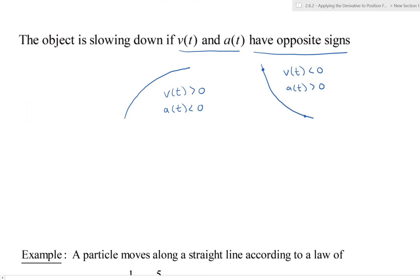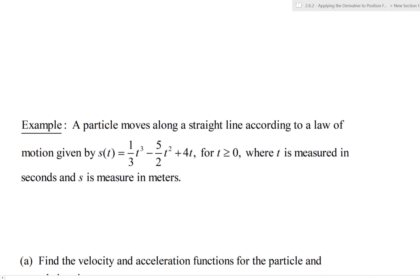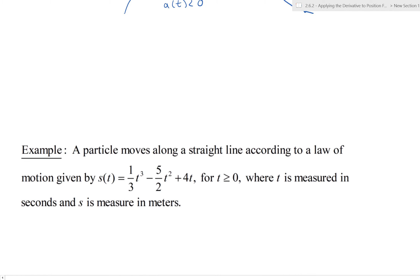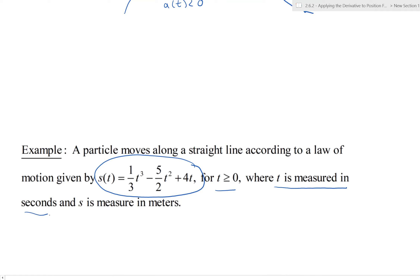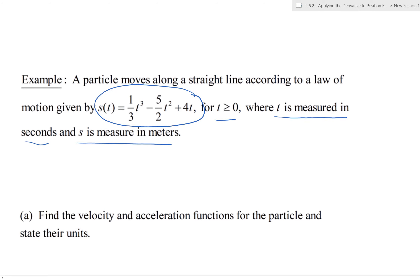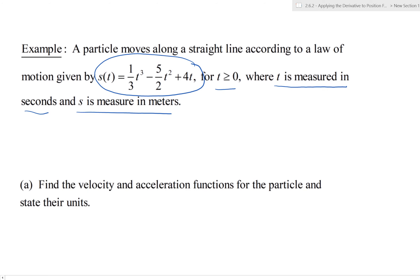Here's the example problem. A particle moves along a straight line according to the position function s(t) = (1/3)t³ − (5/2)t² + 4t, for t ≥ 0, where t is measured in seconds and s is measured in meters.